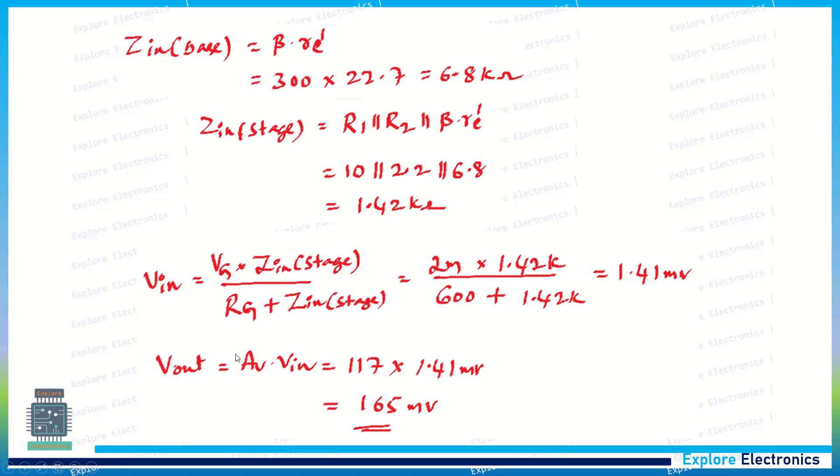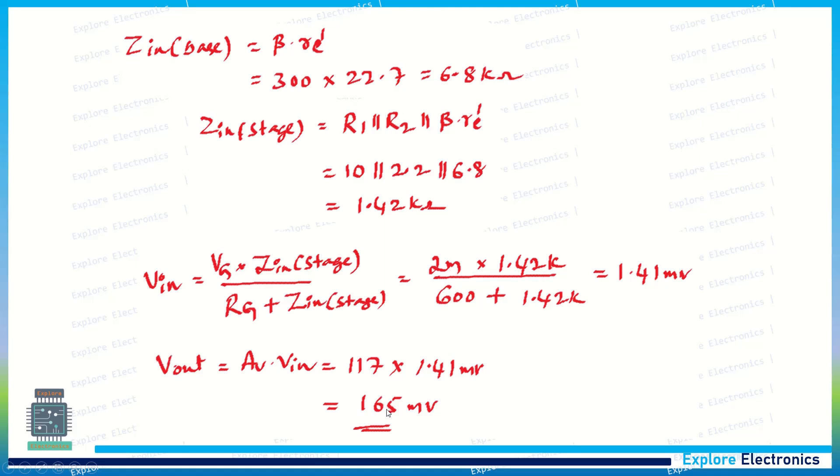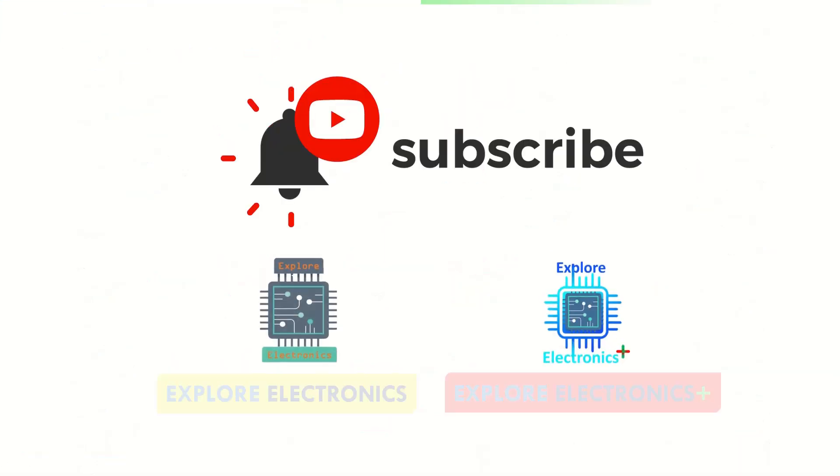For Vout, Vout equals Av times Vin. Since gain equals Vout by Vin, we can write the expression for Vout in terms of gain and Vin. Av is 117 and Vin is 1.41 millivolts, so we get Vout as 165 millivolts. In the question they asked to calculate the output voltage with beta equal to 300, so the output voltage is 165 millivolts for the given problem. Thank you.